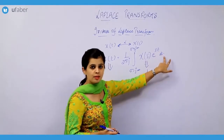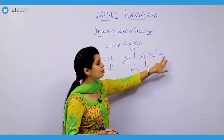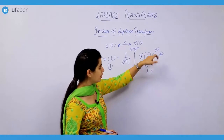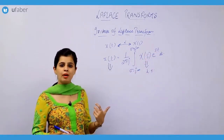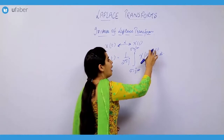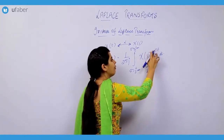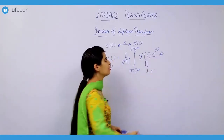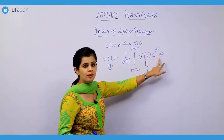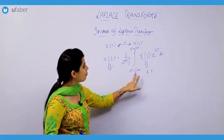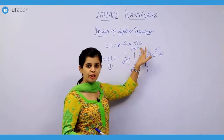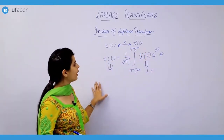The integration is in the frequency domain. When you were finding the Laplace transform you were getting a minus sign, and for the inverse Laplace transform you have a positive sign. The limits are from σ minus j·infinity to σ plus j·infinity. This is how you can find out the inverse Laplace transform.